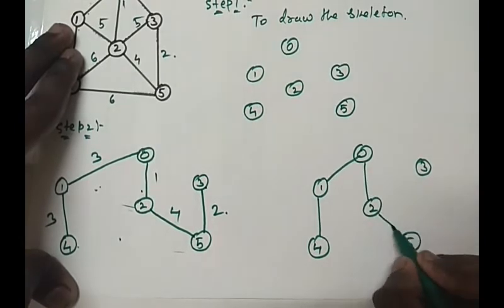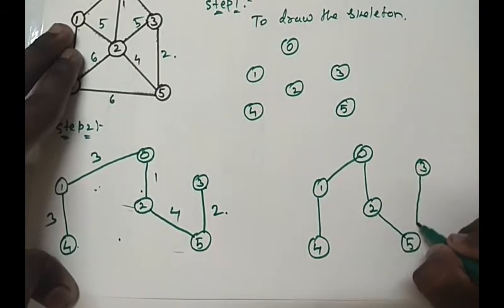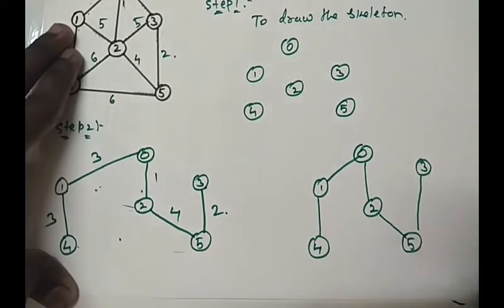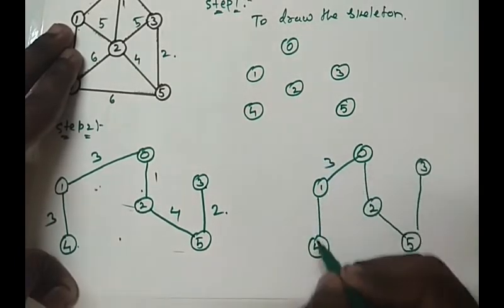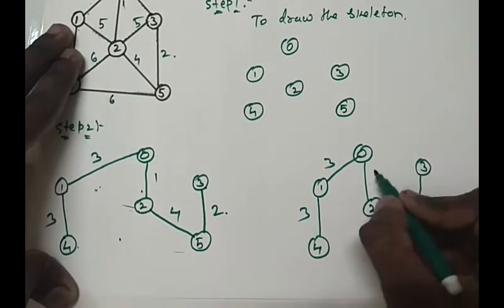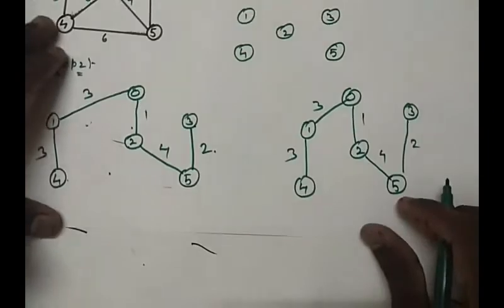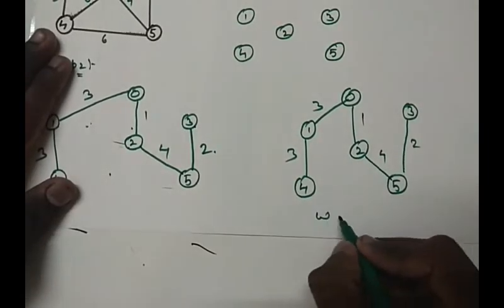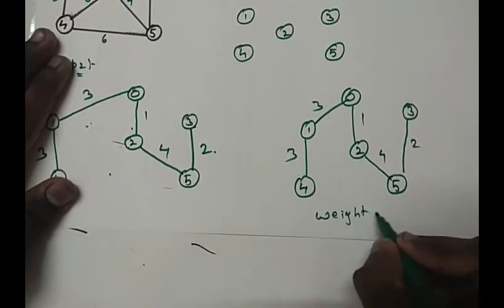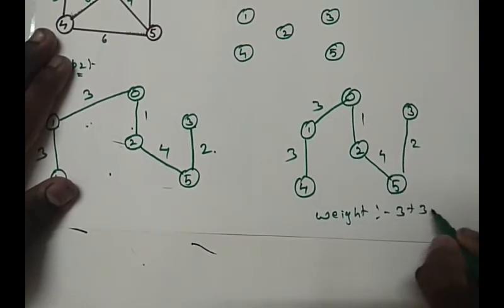If we connect it we can get our minimum spanning tree. Now calculate the weightage of this one: 3 and this is 3, this one is 1, 2 and 4. So weightage will be 3 plus 3 plus 1 plus 4 plus 2, which is 13.